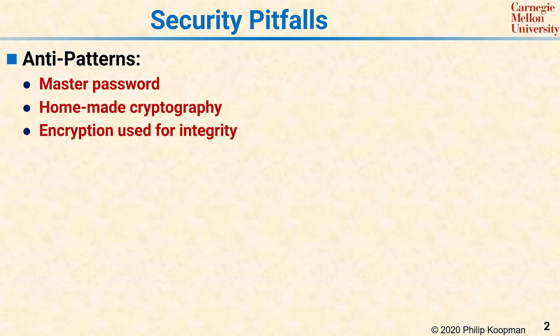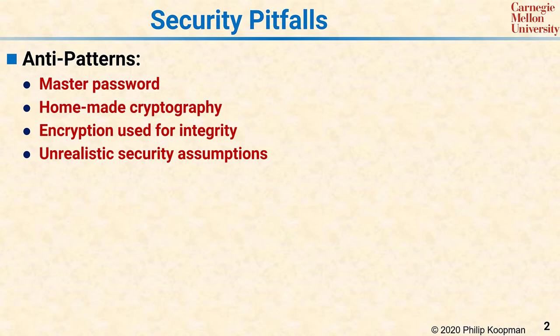If you use encryption to ensure integrity instead of using a secure hash or digital signature, then it is easy to have some sort of security problem. If you make unrealistic security assumptions, such as assuming that users will pick strong passwords, then you might have a security problem. And finally, if your design hinges upon security via obscurity, then you're not really secure.